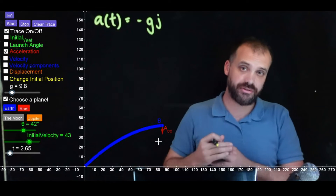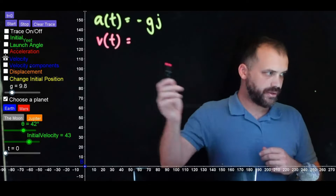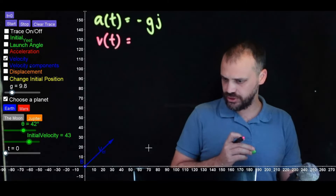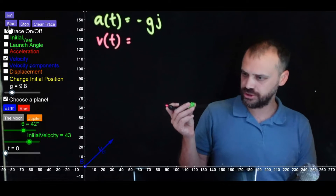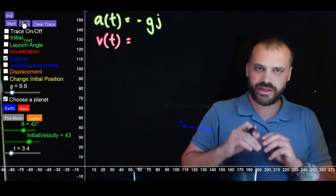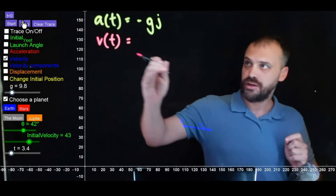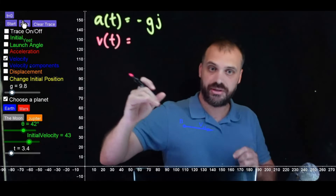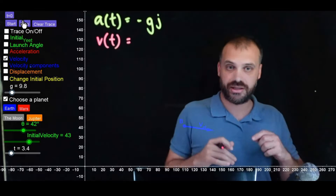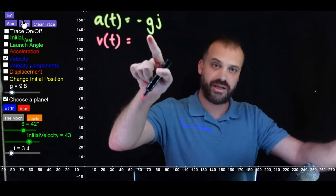From our acceleration function, we can calculate our velocity function. Let's launch it again and show its velocity over the launch — you can see the velocity changing over time. We're going to come up with an equation that describes that velocity over time. The velocity function is the integral of the acceleration, and the integral of negative 9.8 is negative 9.8t j.